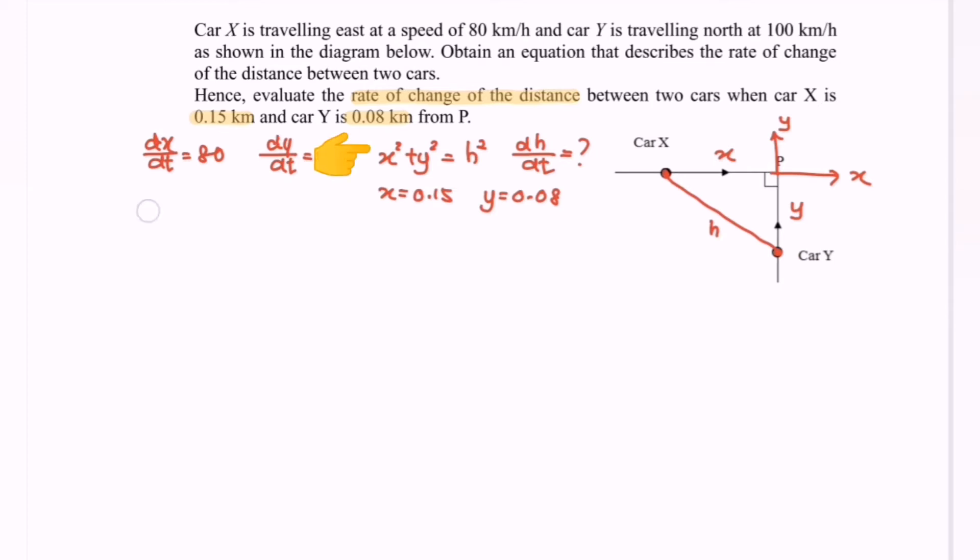Next, substitute the value into the equation so that we can have the value of H. So we have X² + Y² = H². So H equals the square root of 0.15² + 0.08². By using the calculator, H equals 0.17.